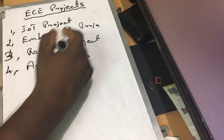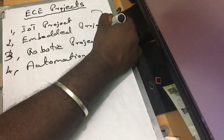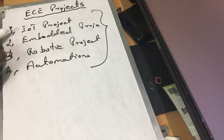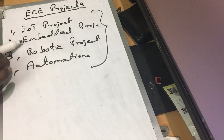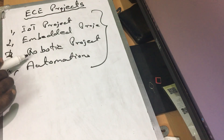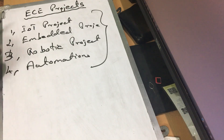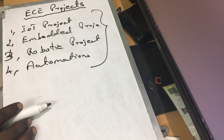So the names are IoT project, embedded project, robotic, automation — they are just different names for similar concepts.